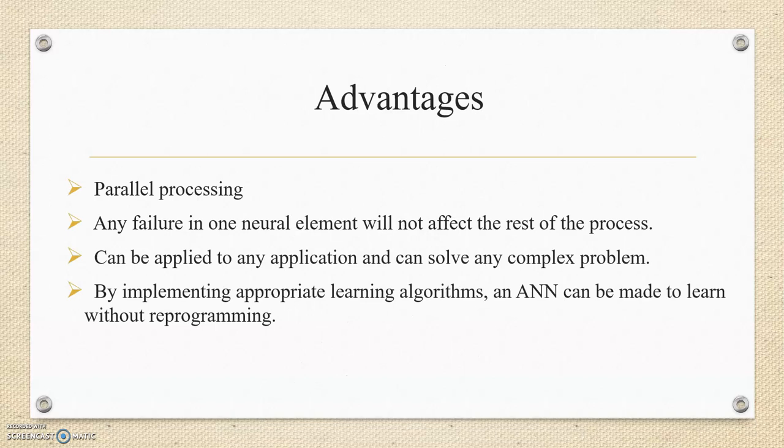So, what are the advantages of artificial neural network? The main advantage of artificial neural network is parallel processing. This makes it more powerful than linear programs. Due to their parallel processing structure, any failure in neural element will not affect the rest of the process.